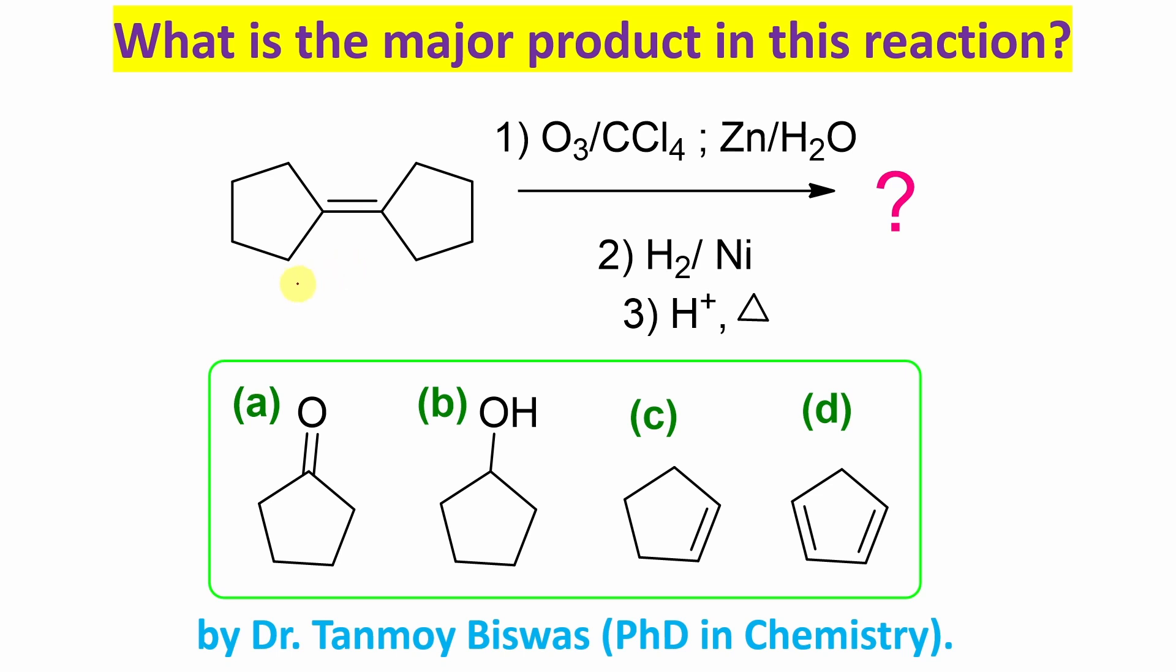Now I believe we have tried, so let's start. Since it's actually a multi-step reaction, let's go step by step. Now if you look at this, this is actually an alkene, and if you look at this first reaction condition, this is actually ozonolysis.